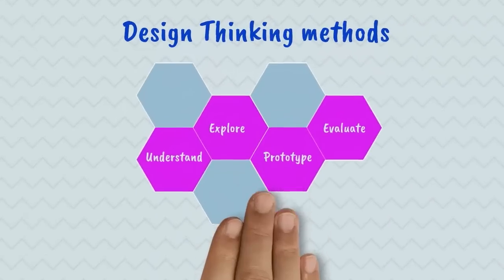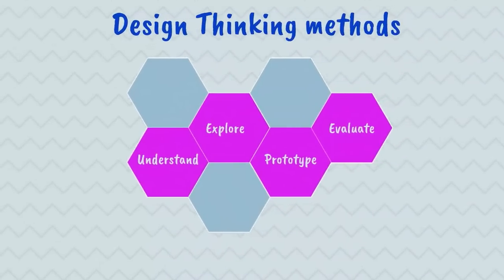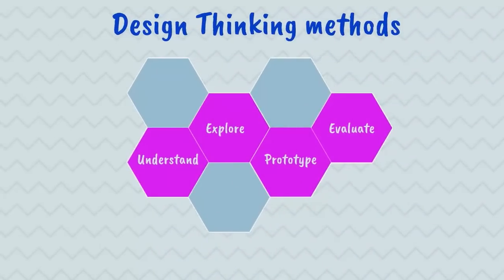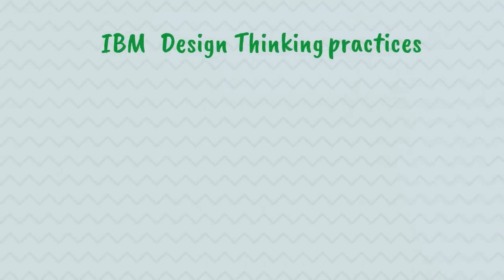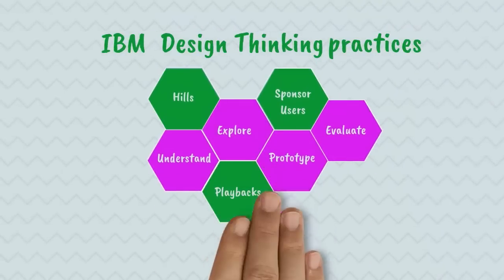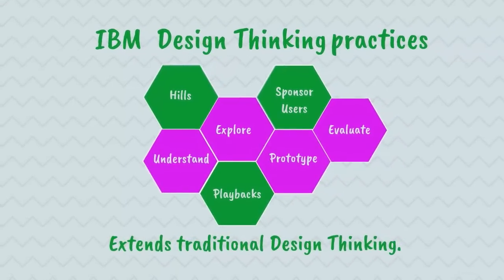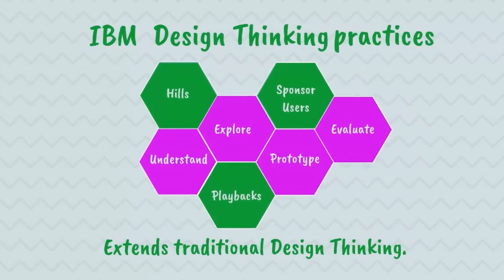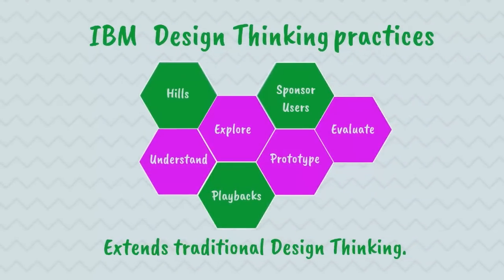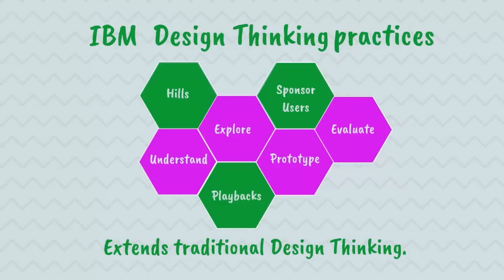Traditional Design Thinking methods are understand, explore, prototype, and evaluate. IBM has expanded upon Traditional Design Thinking by adding three key practices: hills, sponsor users, and playbacks. This is called IBM Design Thinking.